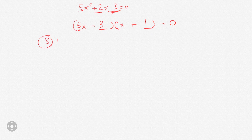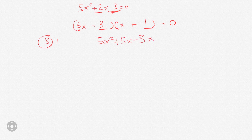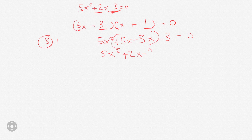Just to check our work, let's do the FOIL — first, outer, inner, and last. 5x times x is 5x squared, that's the first. The outer is 5x and 1, so that's plus 5x. The inner is negative 3 and x, so that's negative 3x. And the last is negative 3 and 1. So we have 5x squared, and then plus 2x minus 3 equals 0. So we did get it right.